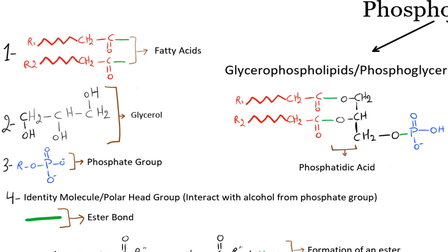Phosphoglycerides are derivatives of phosphatidic acid, in which this structure gets modified to produce other phosphoglycerides. A phosphoglyceride is composed of a glycerol backbone, a phosphate group, a fatty acid, and an identity molecule.